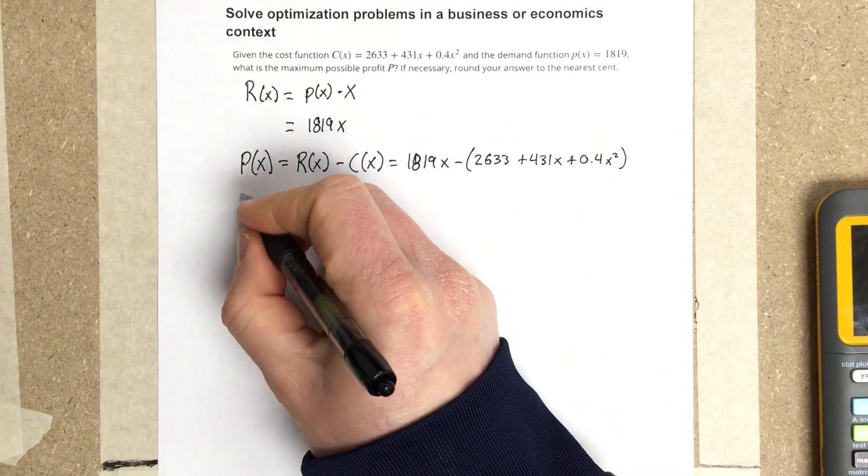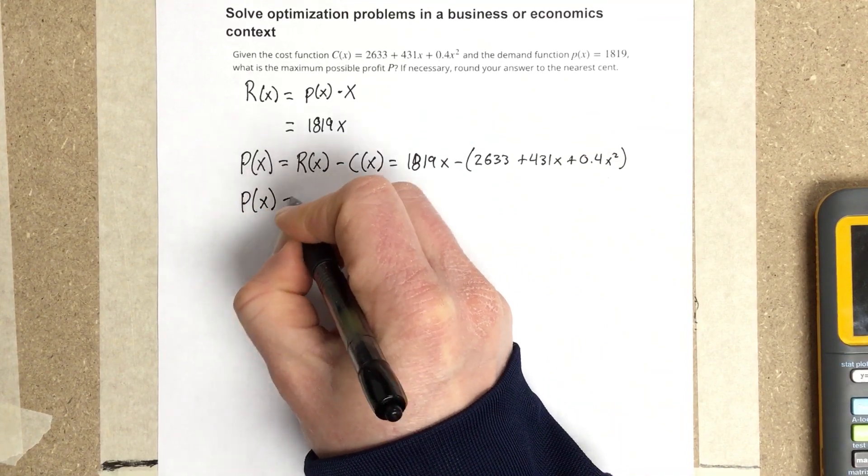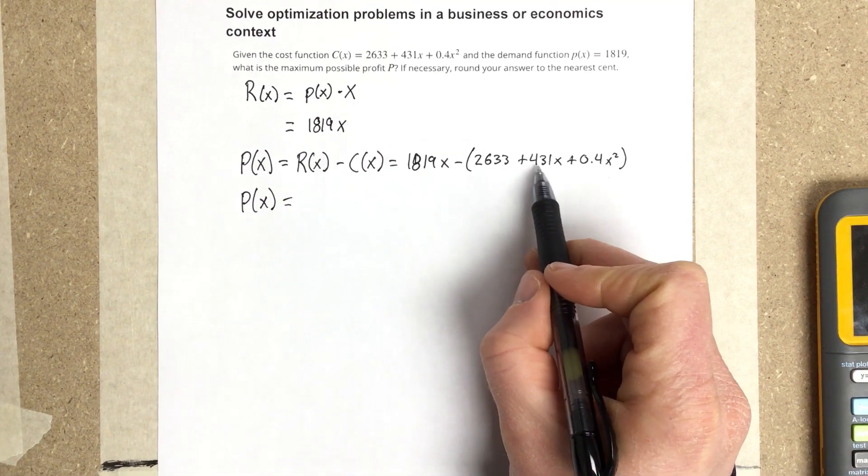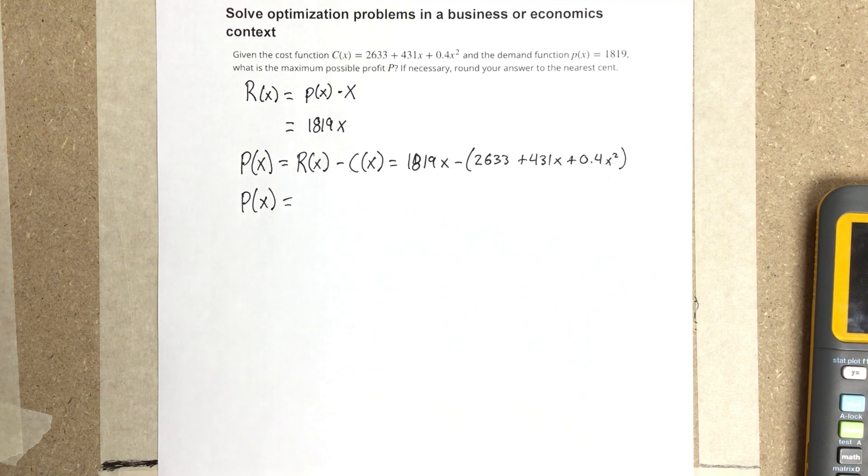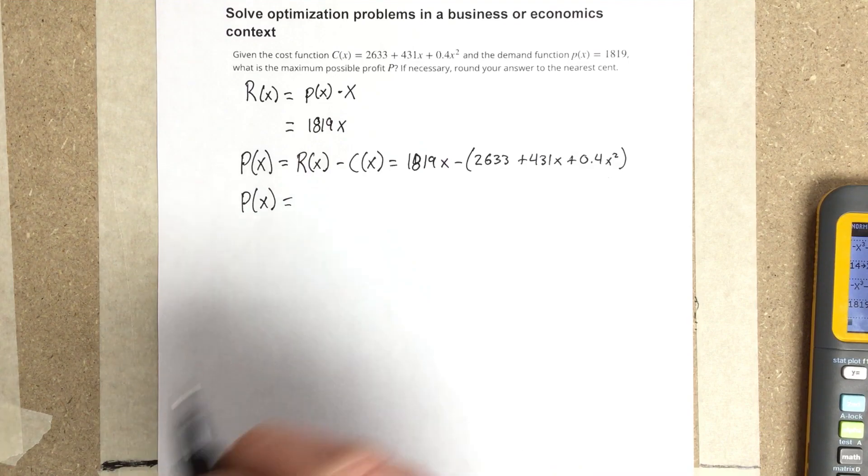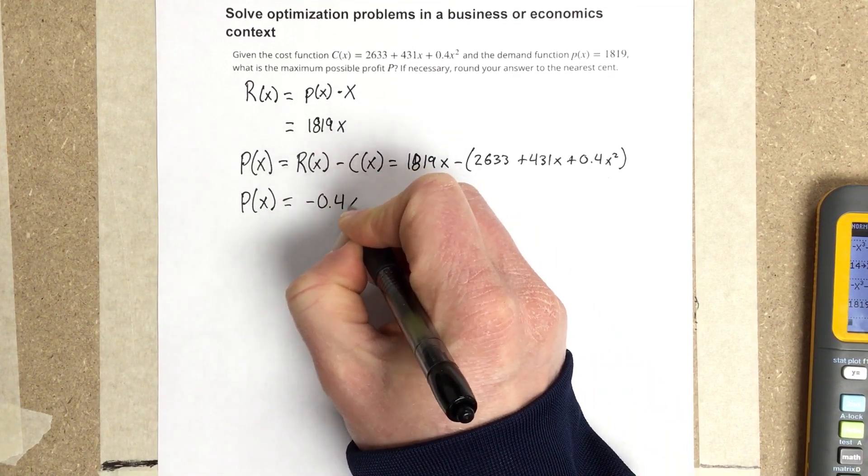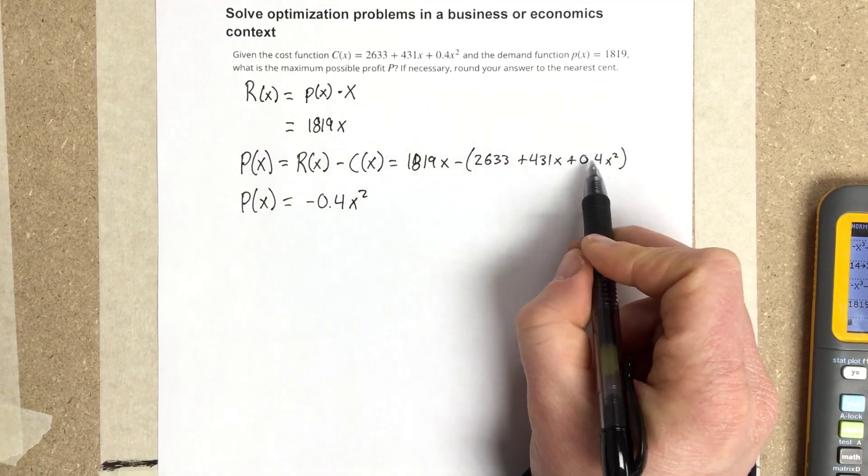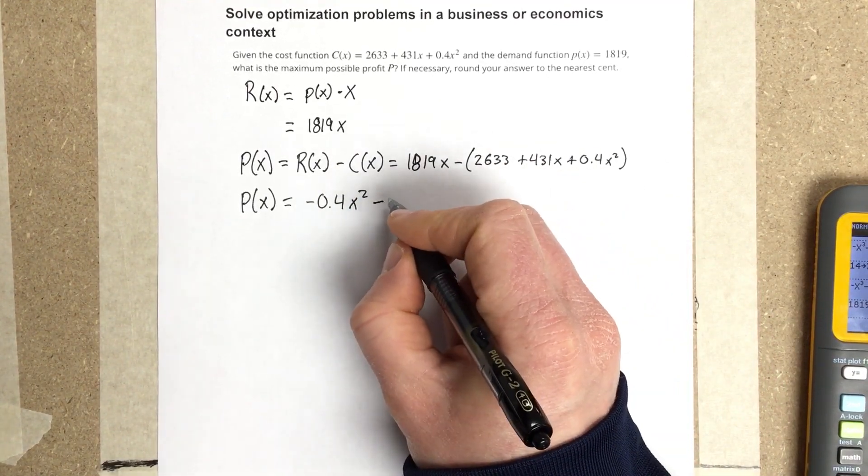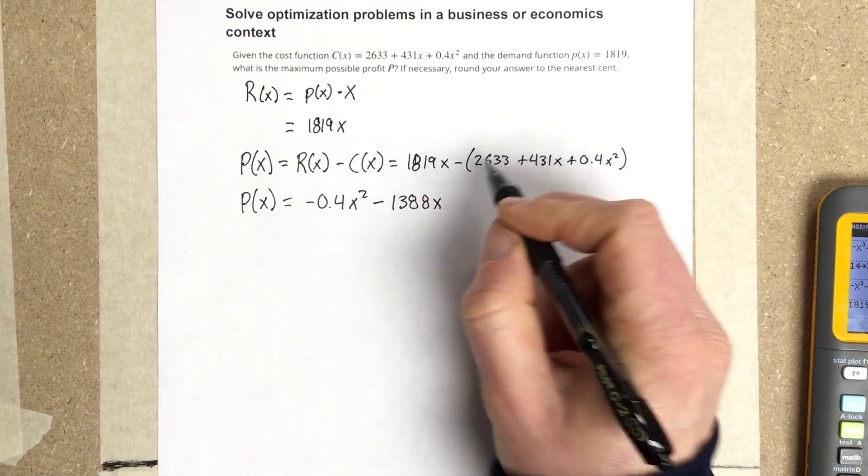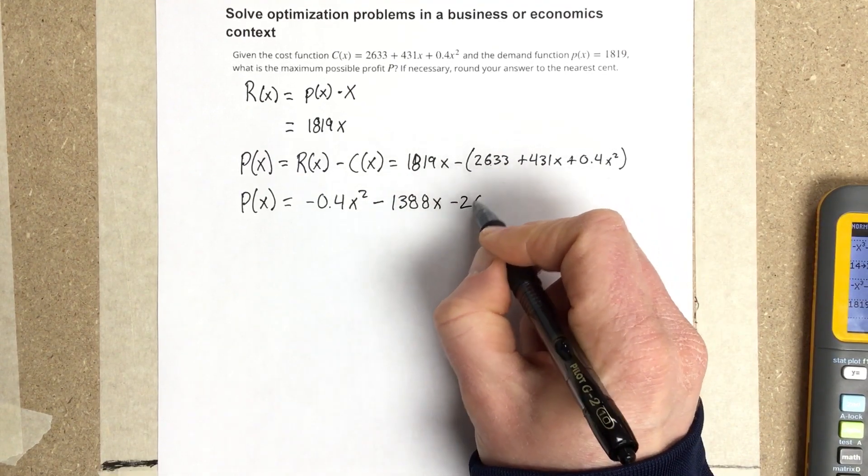Distributing the negative and combining like terms: 1819 - 431 = 1388. So the profit equation becomes P(x) = -0.4x² + 1388x - 2633.